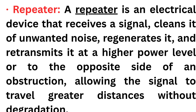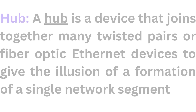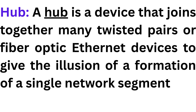A repeater is an electrical device that receives a signal, cleans it of unwanted noise, regenerates it, and retransmits it at a higher power level or to the opposite side of an obstruction, allowing the signals to travel greater distances without degradation. A hub is a device that joins together many twisted pairs or fiber optic ethernet devices to give the illusion of a single network segment.